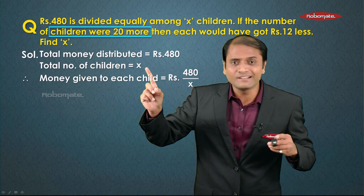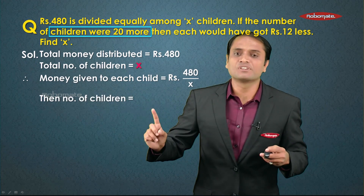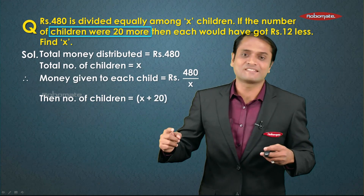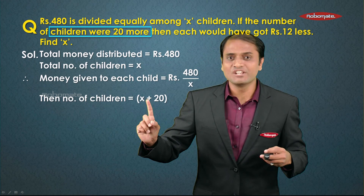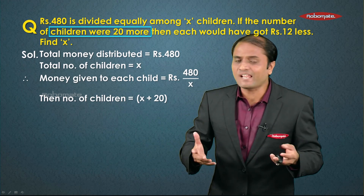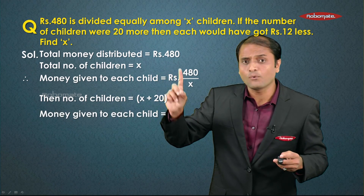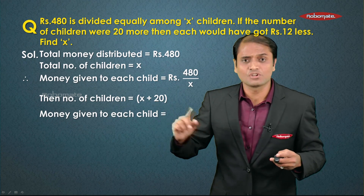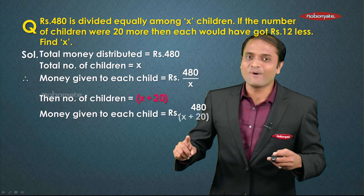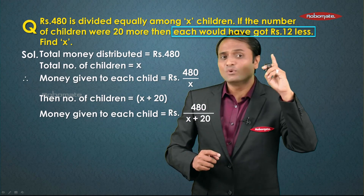Further, the problem says if 20 children were more — x increases by 20 — so the new number of children is x plus 20. With this new count, the amount given to each child will change. Since we are distributing 480 to x plus 20 children, the new amount per child is rupees 480 divided by (x plus 20).